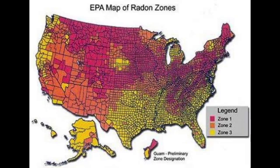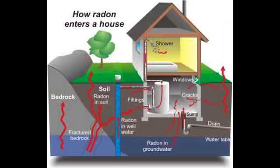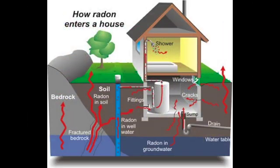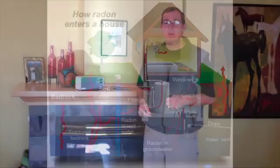In Colorado and all along the Front Range, we have a lot of uranium in our soil bed. The decay of the uranium is what causes radon to develop. Radon is a gas — it comes up out of the soil naturally as the uranium decays. The particle is very light and travels up into the air when it's outside, and out of harm's way very quickly.